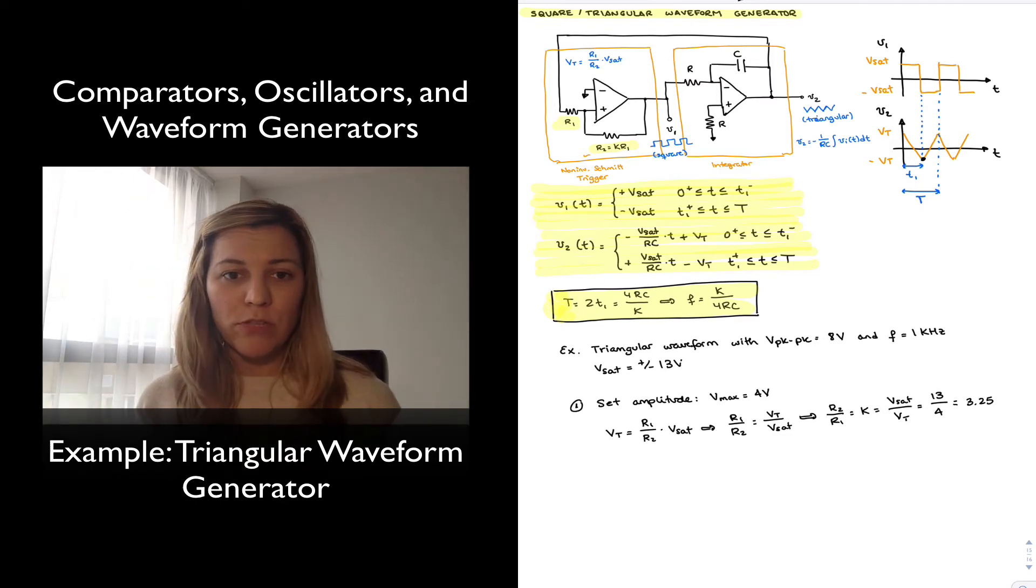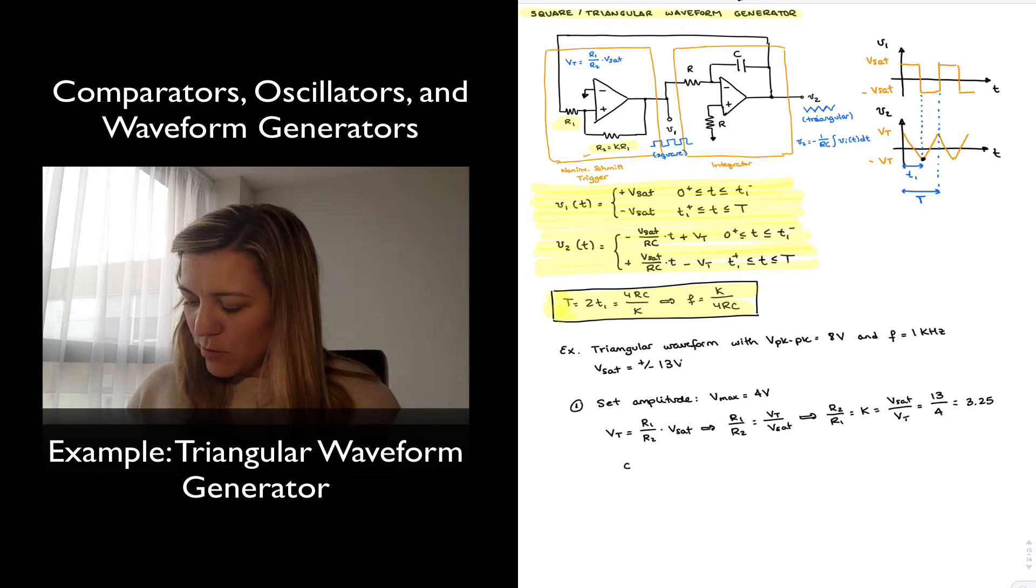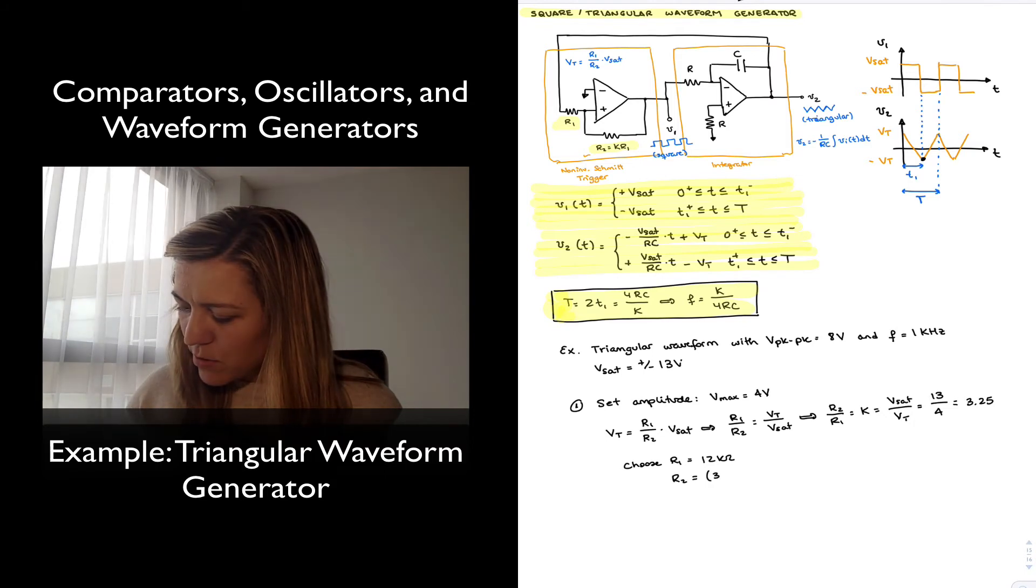I can choose multiple resistor values that are going to meet this specification, but for the sake of example, I'm going to go ahead and select R1 being equal to 12 kilo-ohms, and in that case R2 is going to be equal to 3.25 times 12K, or 39 kilo-ohms.